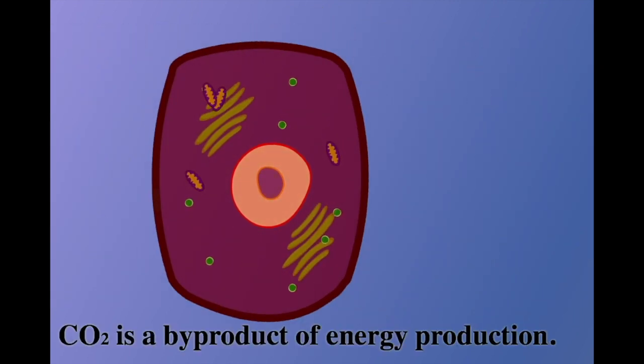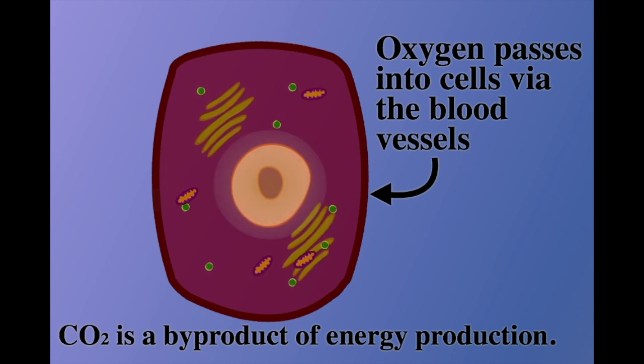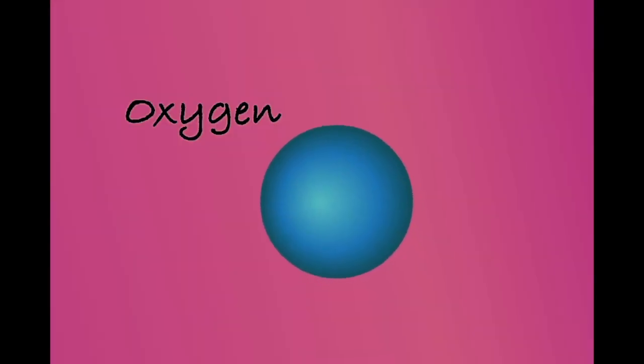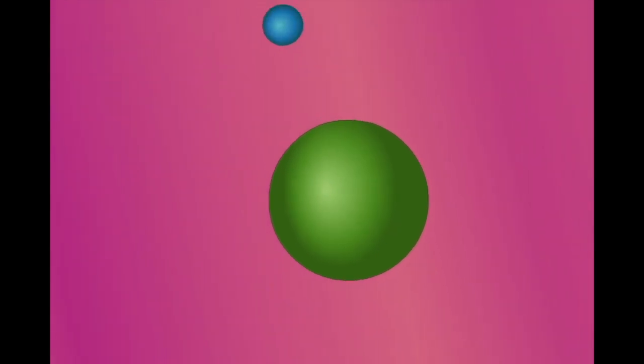CO2 is a by-product of the way energy is produced within cells. Oxygen, inhaled through the lungs, passes into the cells via the bloodstream. Once inside the cell, it is used to help break down glucose in the process we know as aerobic respiration.